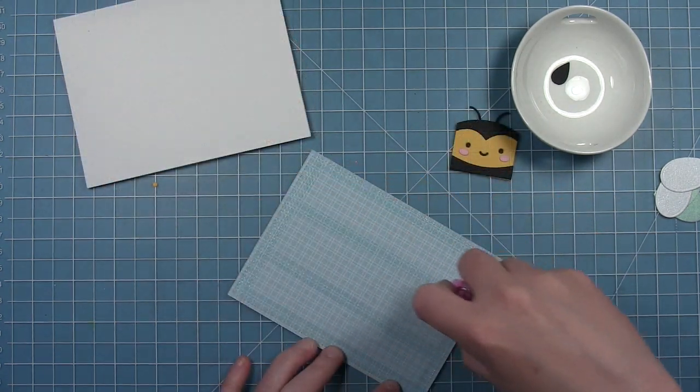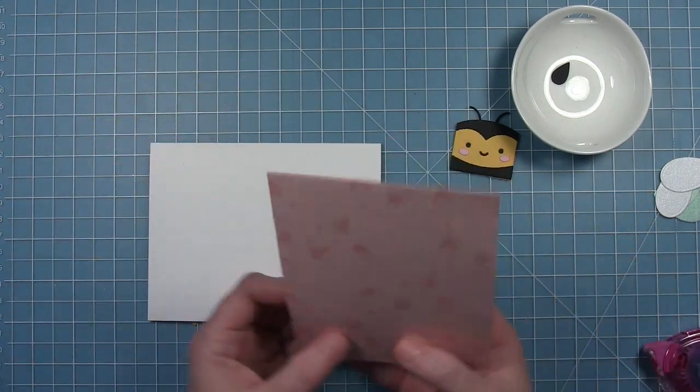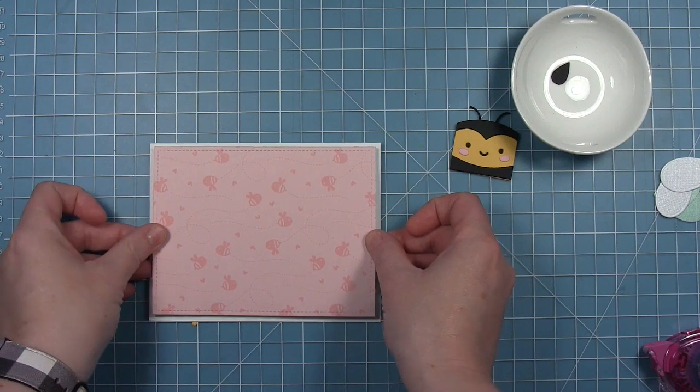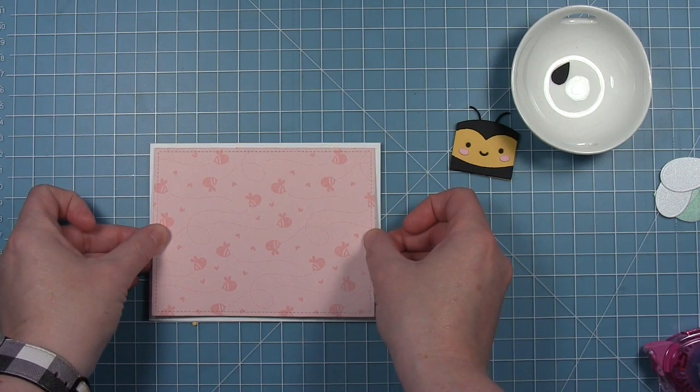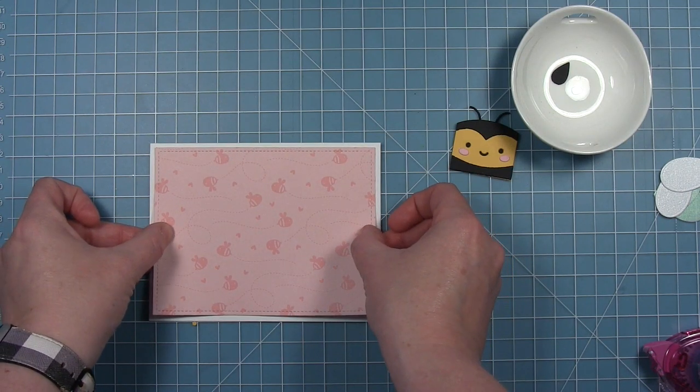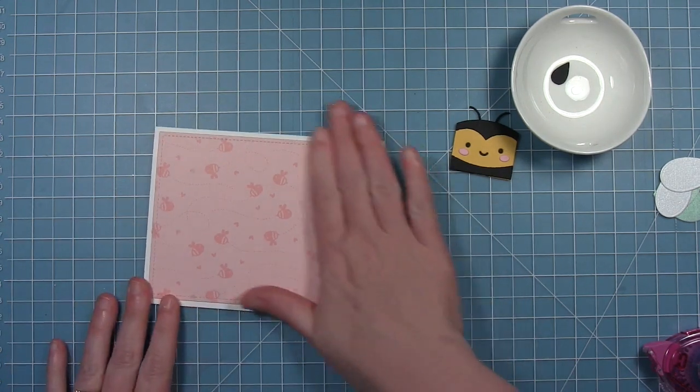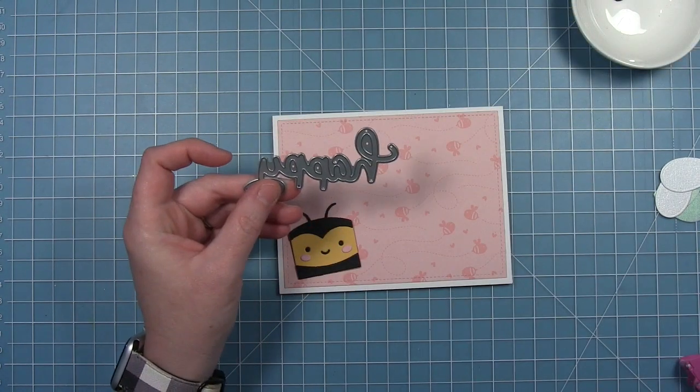I have a piece of that pink paper with the bee design on it from Hello Sunshine. I've just cut it out with a stitched rectangle and I'm going to layer it onto a white card base so I have that thin white frame around it. I just thought that this paper went perfectly with this little bee that we're going to put on the front.